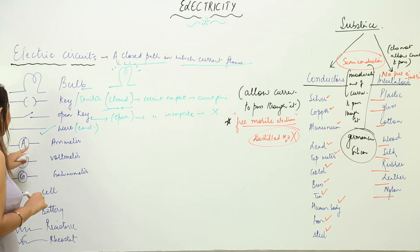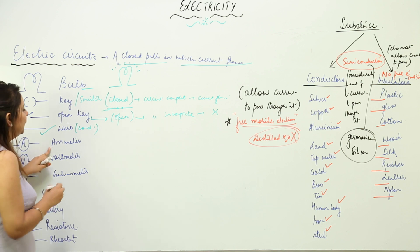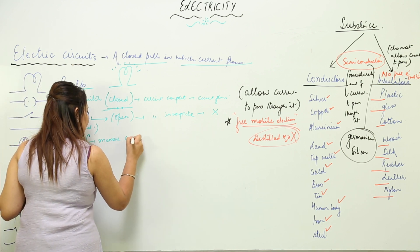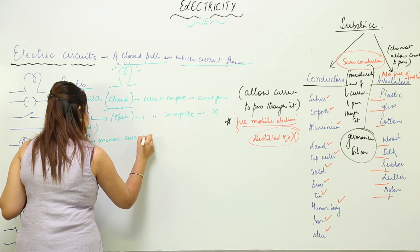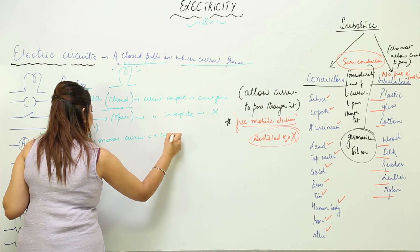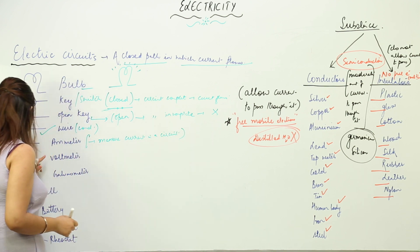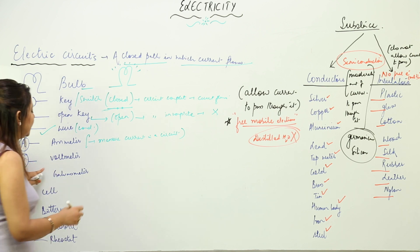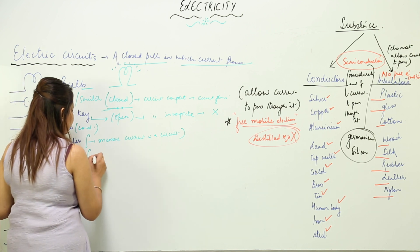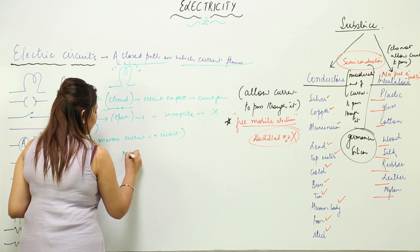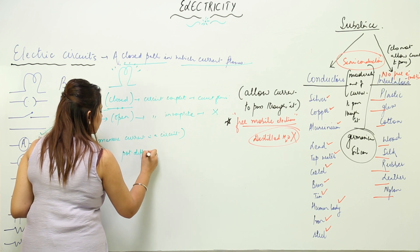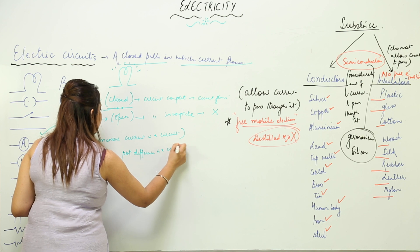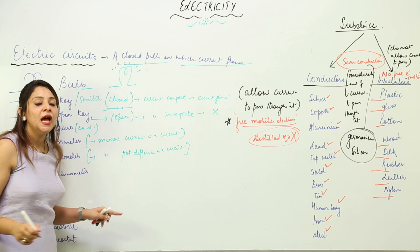An ammeter is shown by the symbol 'A' in a circle. An ammeter is a device used to measure current in a circuit. Next, we have a voltmeter, noted by 'V', and it is used to measure potential difference in a circuit.